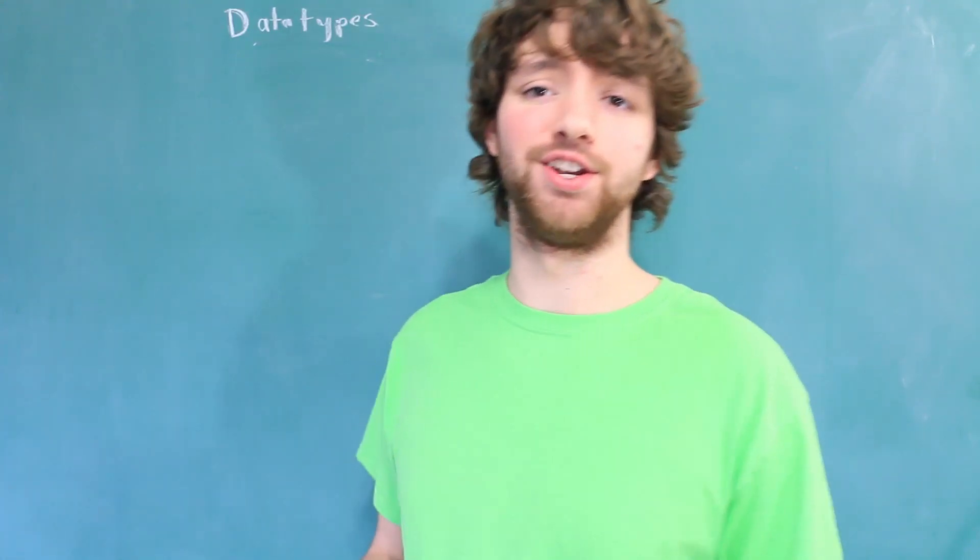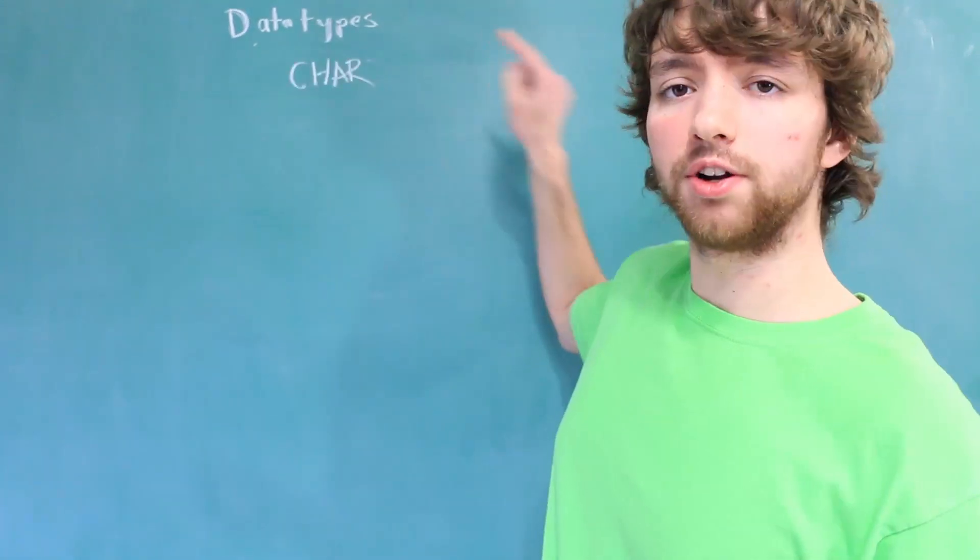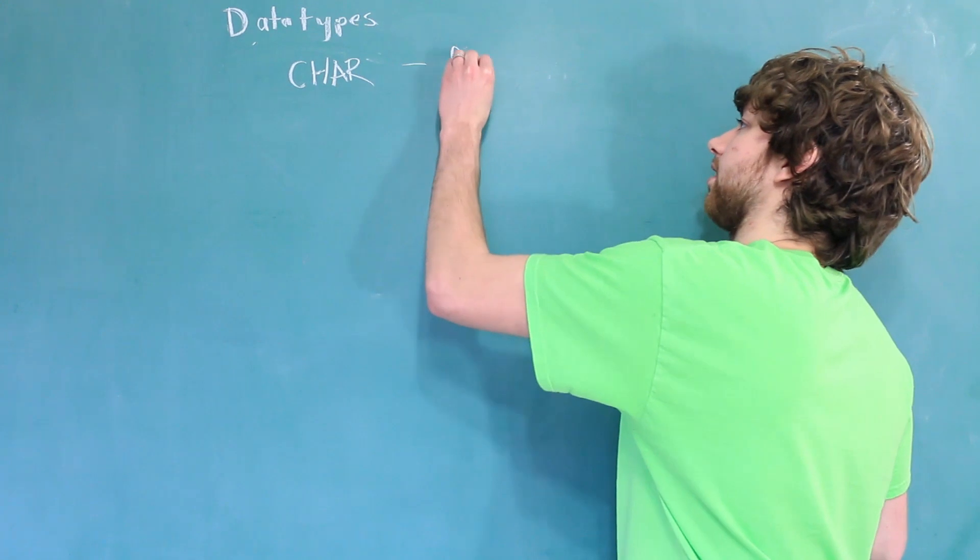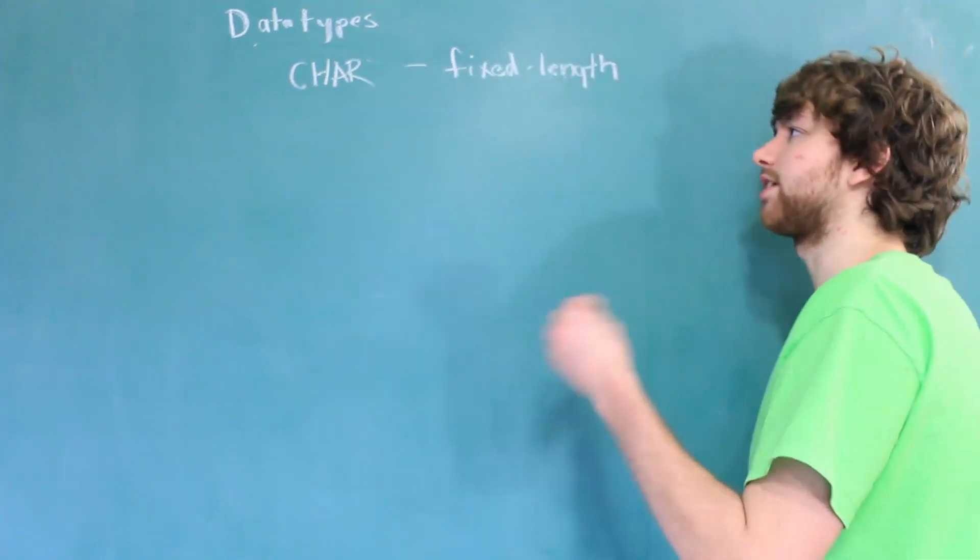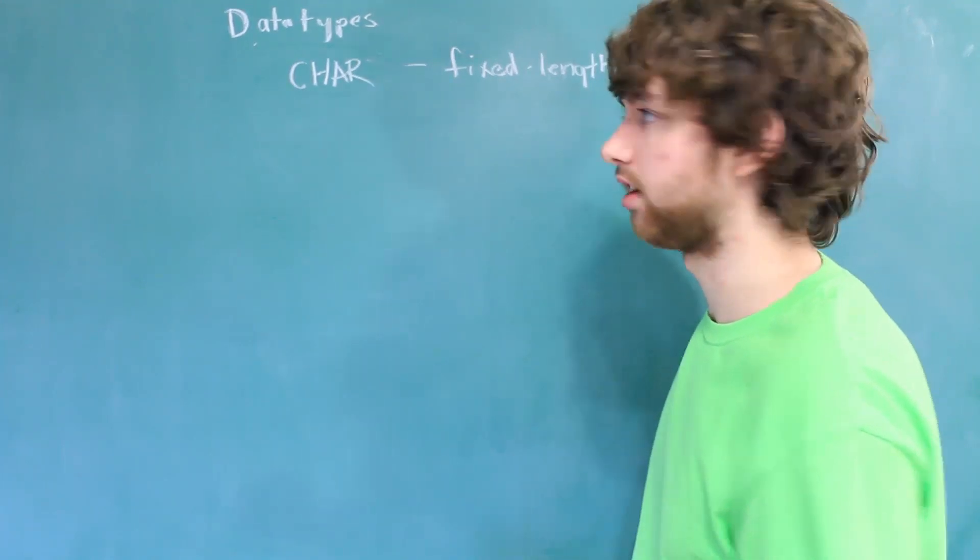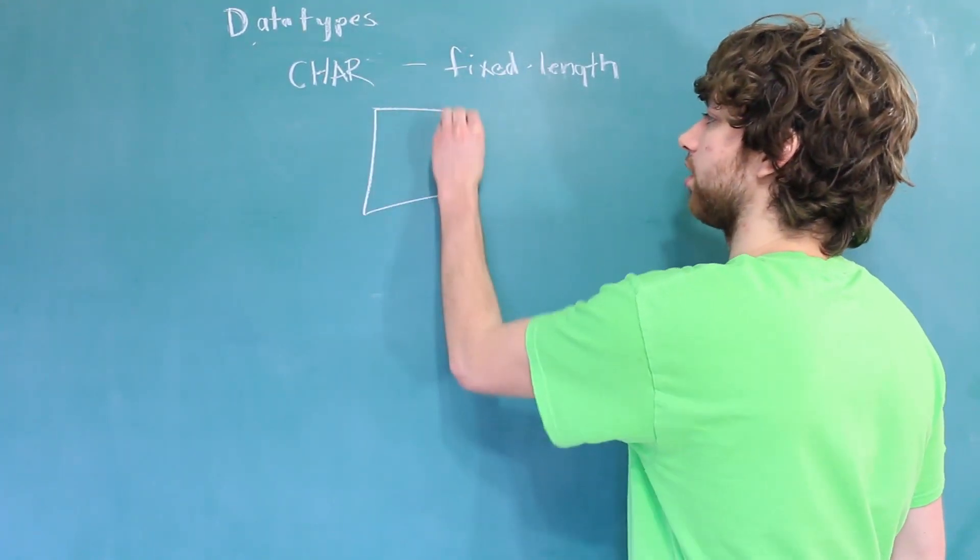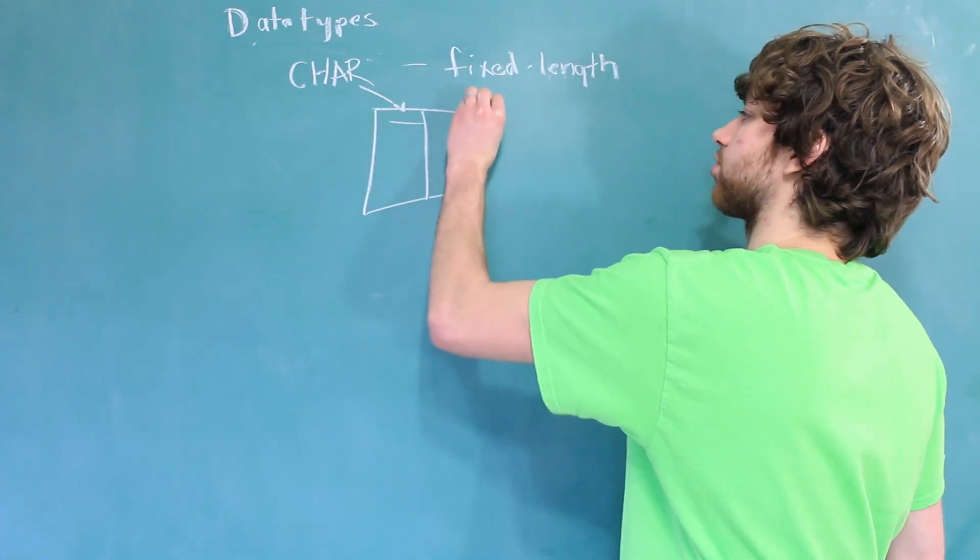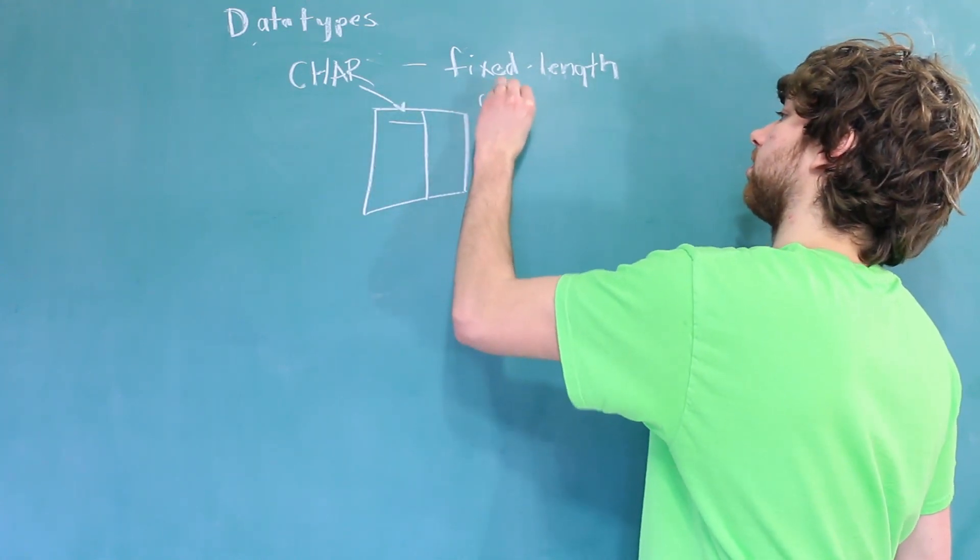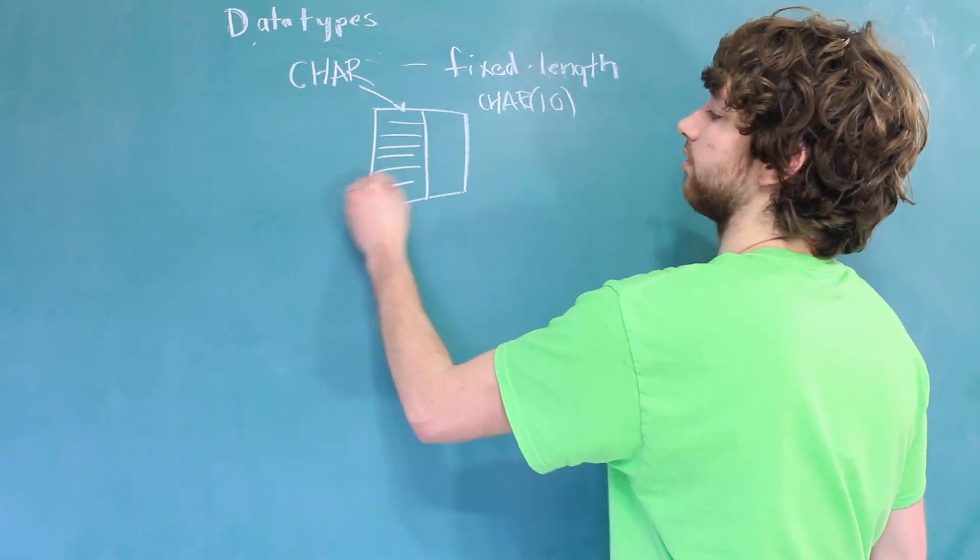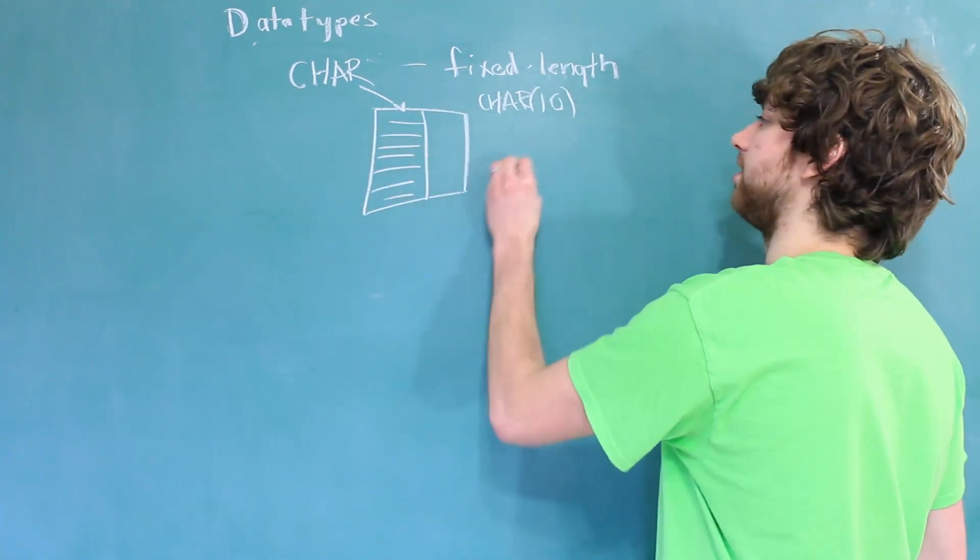Now the very first data type you need to know about is CHAR. CHAR is a data type that is known as a fixed-length data type, and what that means is every single value for a char column is going to be of the same length. So if you have a table and one of the columns is of type char, and let's say it's char 10, every single value for that column is going to be 10 characters.